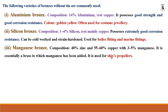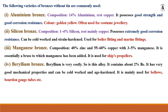Beryllium bronze — beryllium is very costly, so this is an expensive alloy. It has very good mechanical properties and can be cold worked and hardened. It is mainly used for bellows, Bourdon gauge tubes, etc.